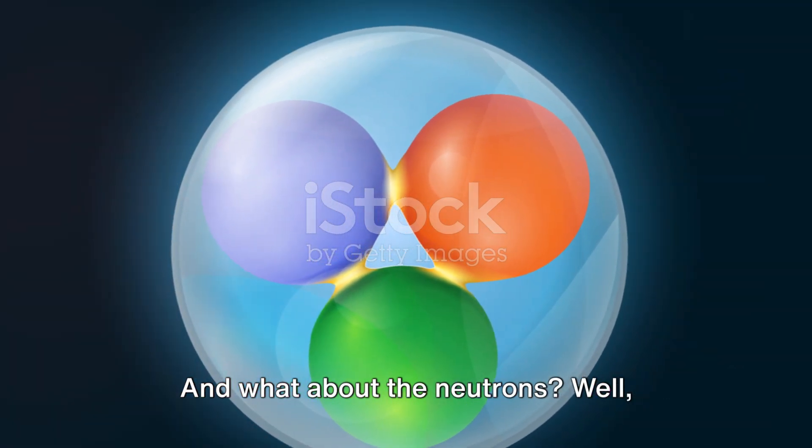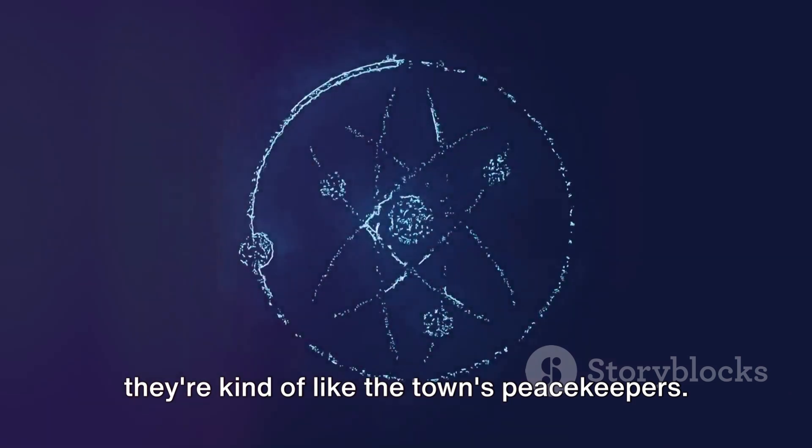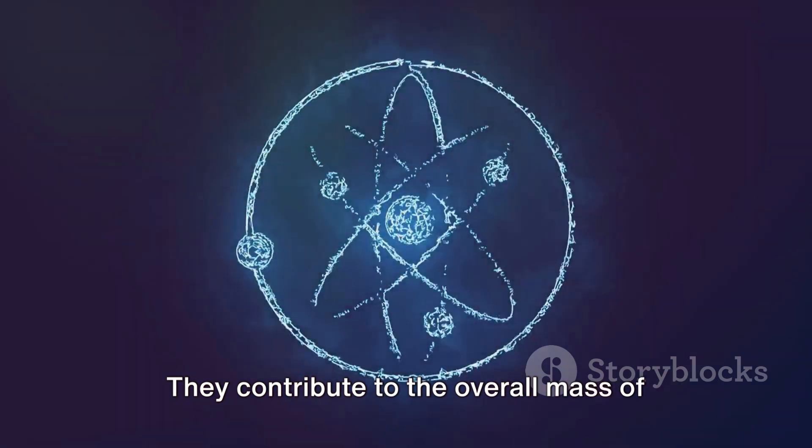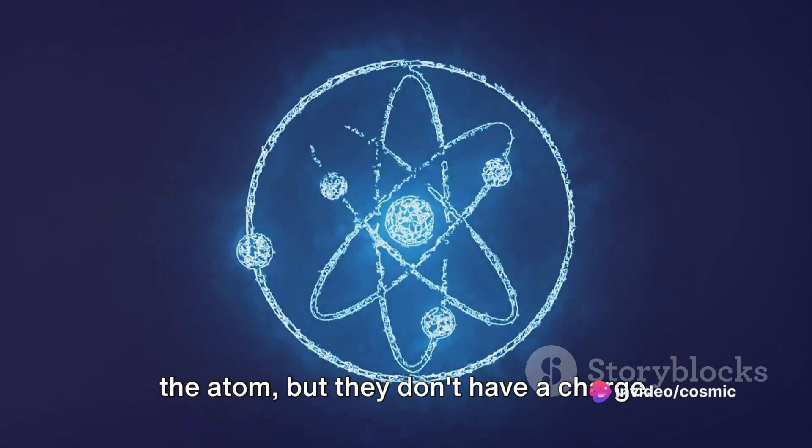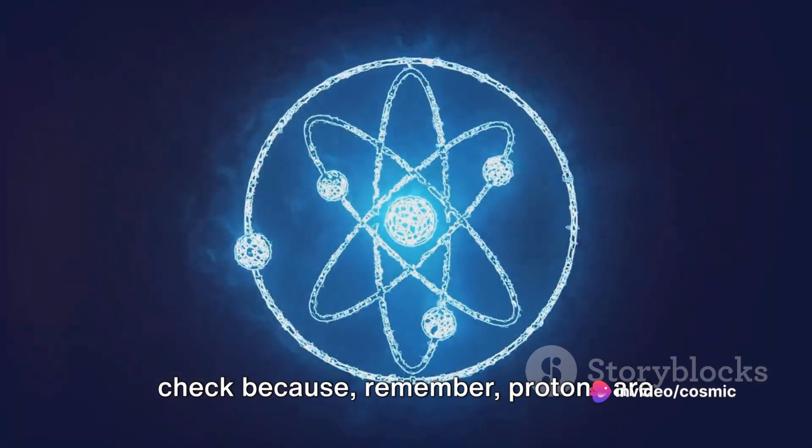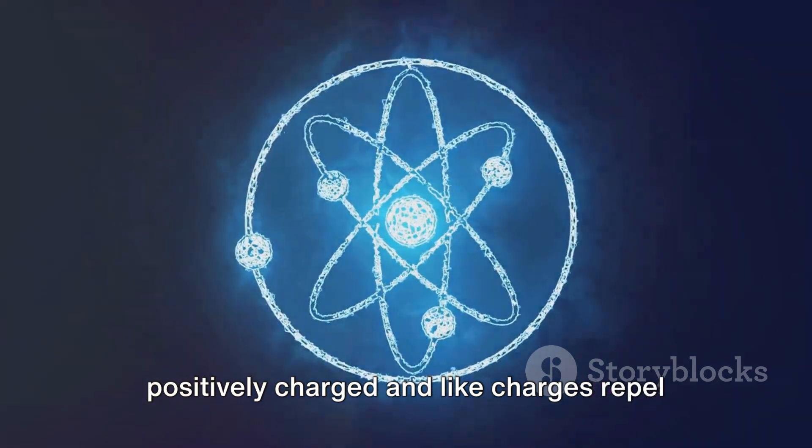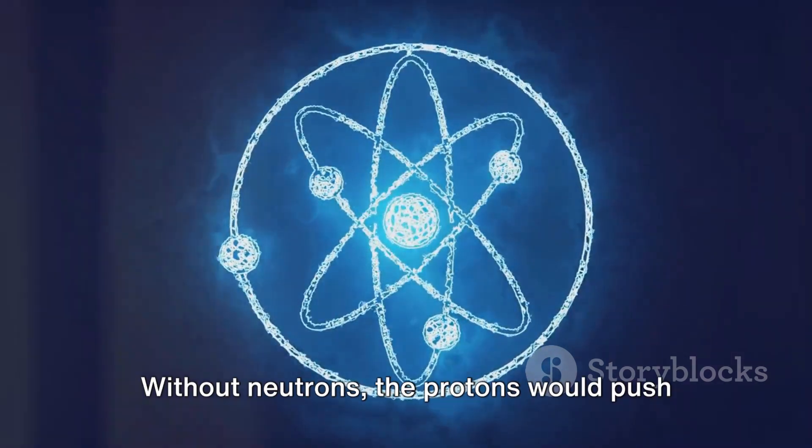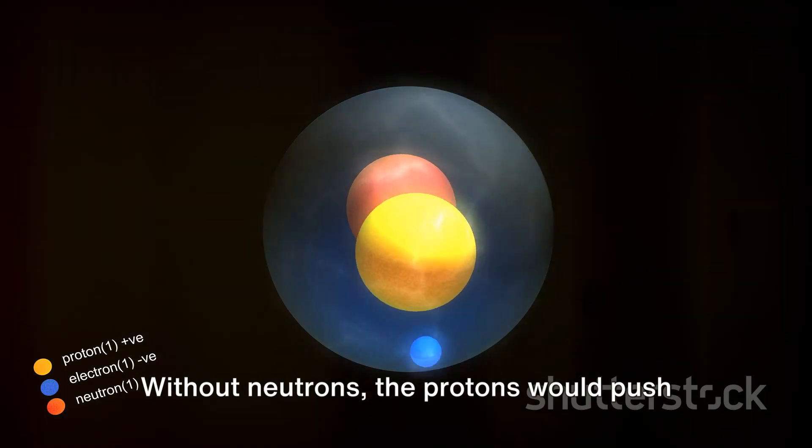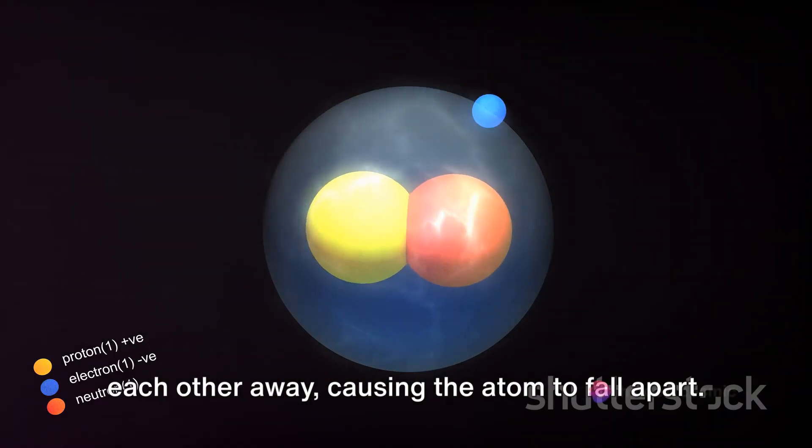And what about the neutrons? Well, they're kind of like the town's peacekeepers. They contribute to the overall mass of the atom but they don't have a charge. Their role is to keep the protons in check because, remember, protons are positively charged and like charges repel each other. Without neutrons, the protons would push each other away causing the atom to fall apart.